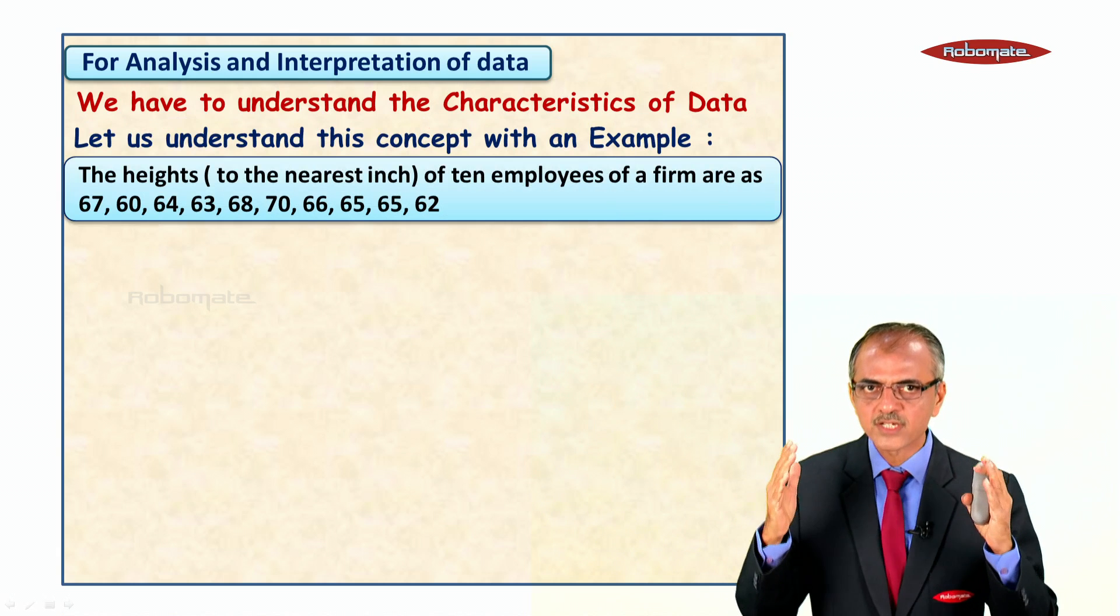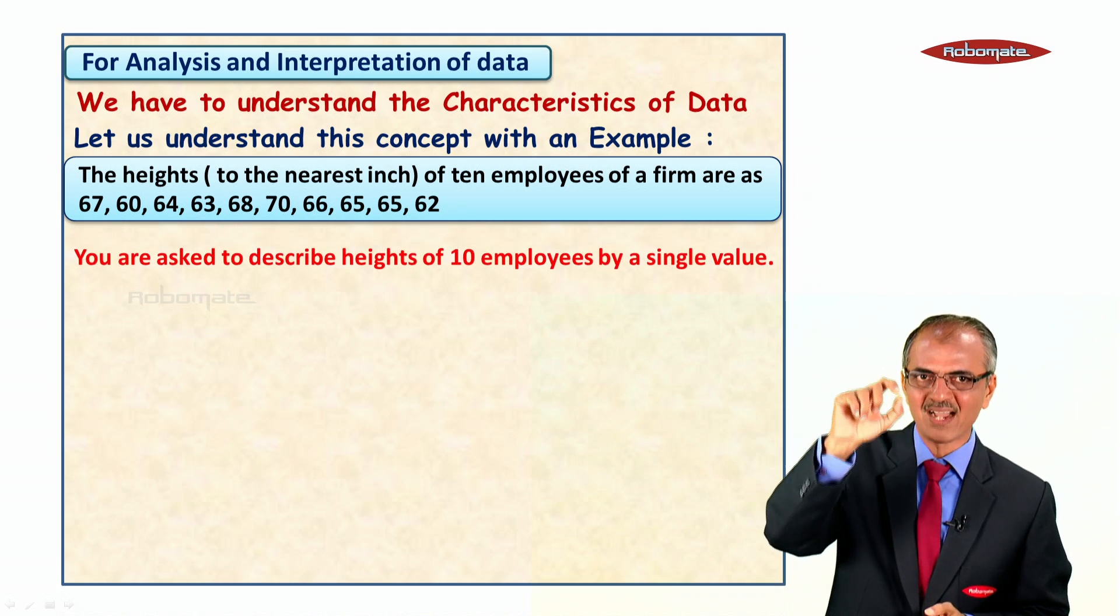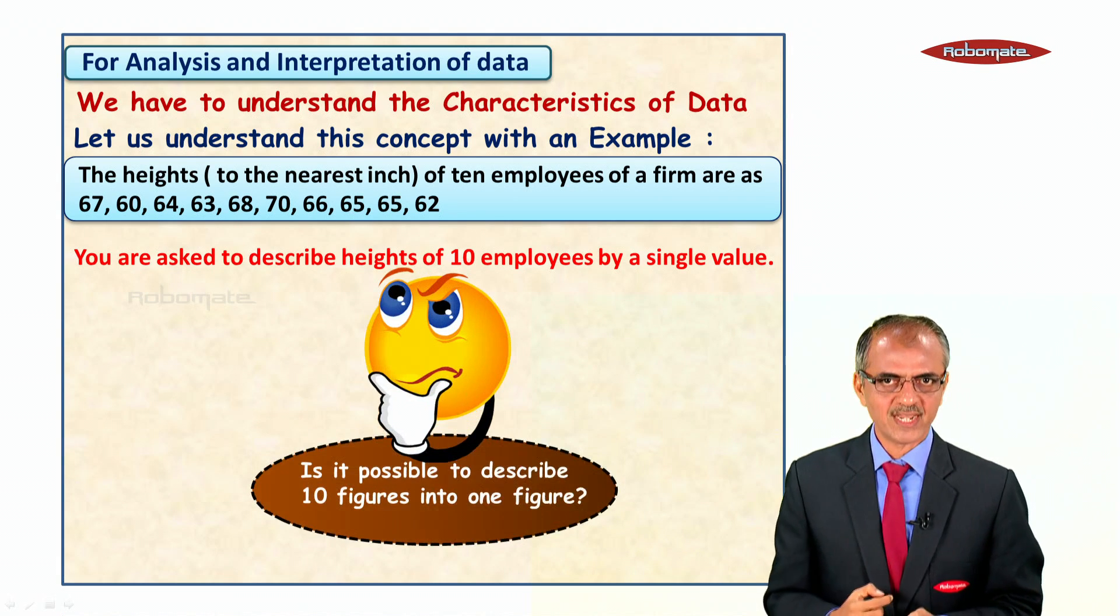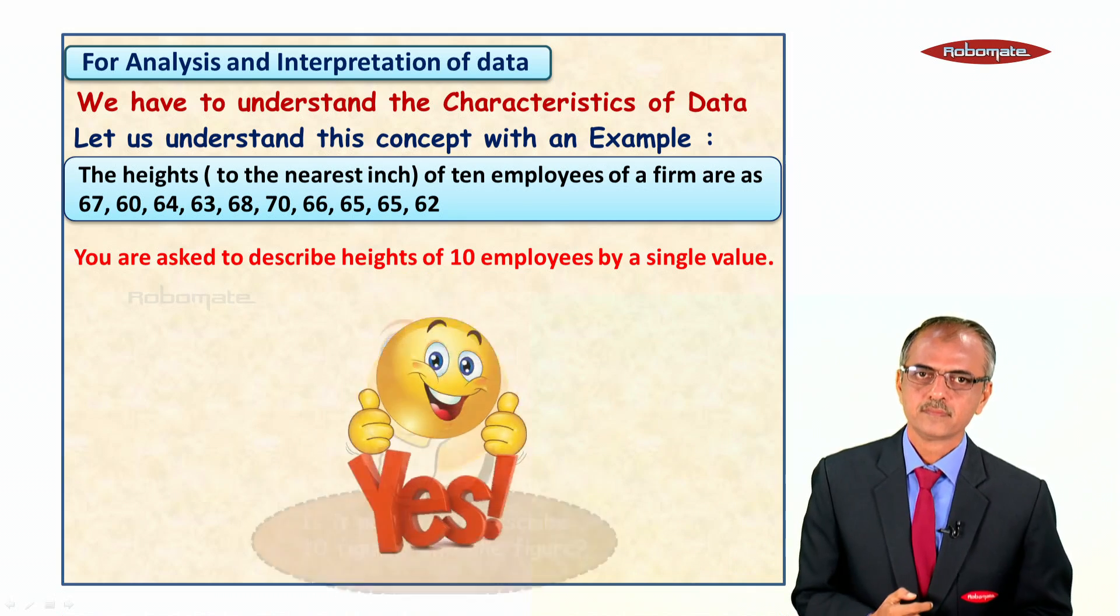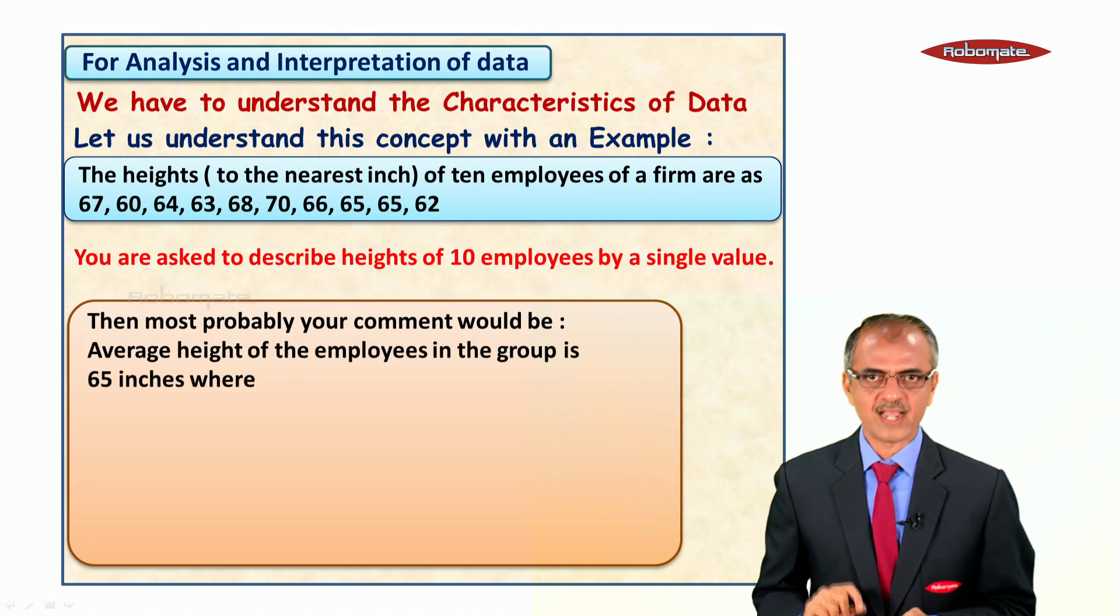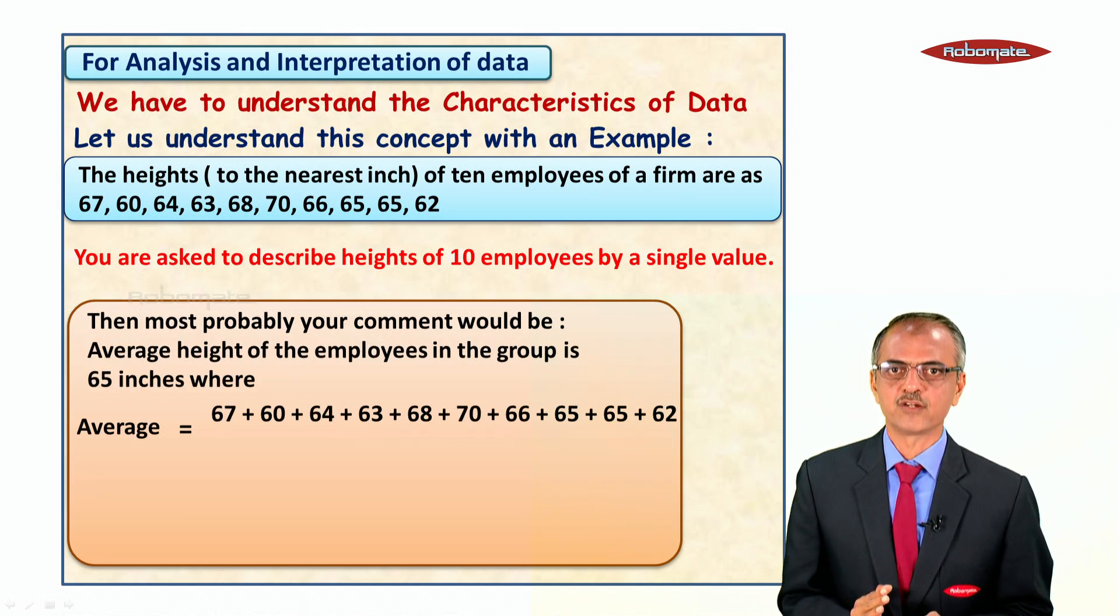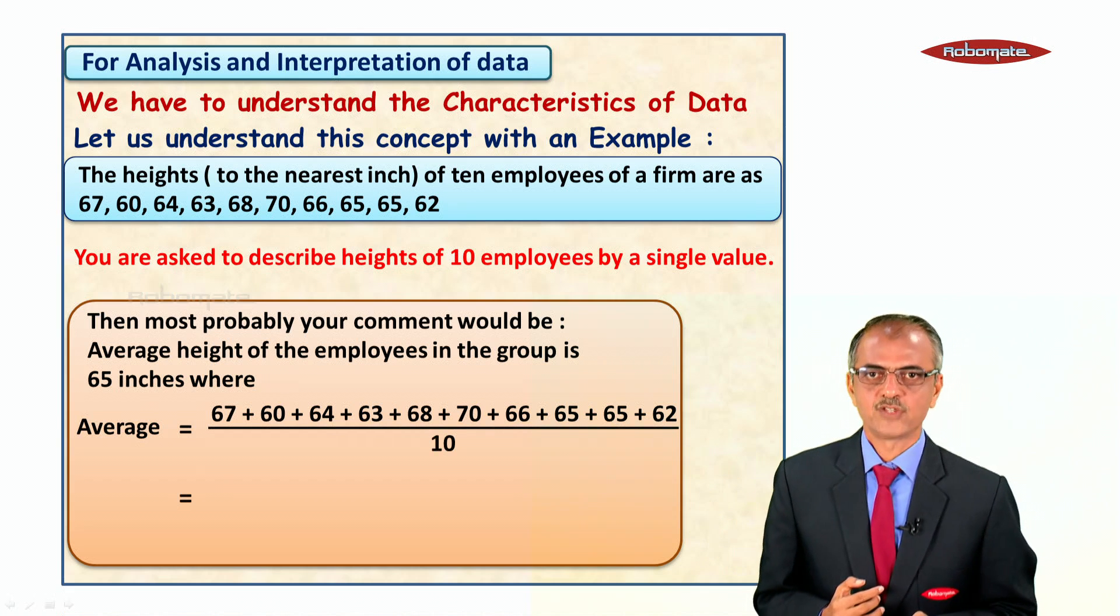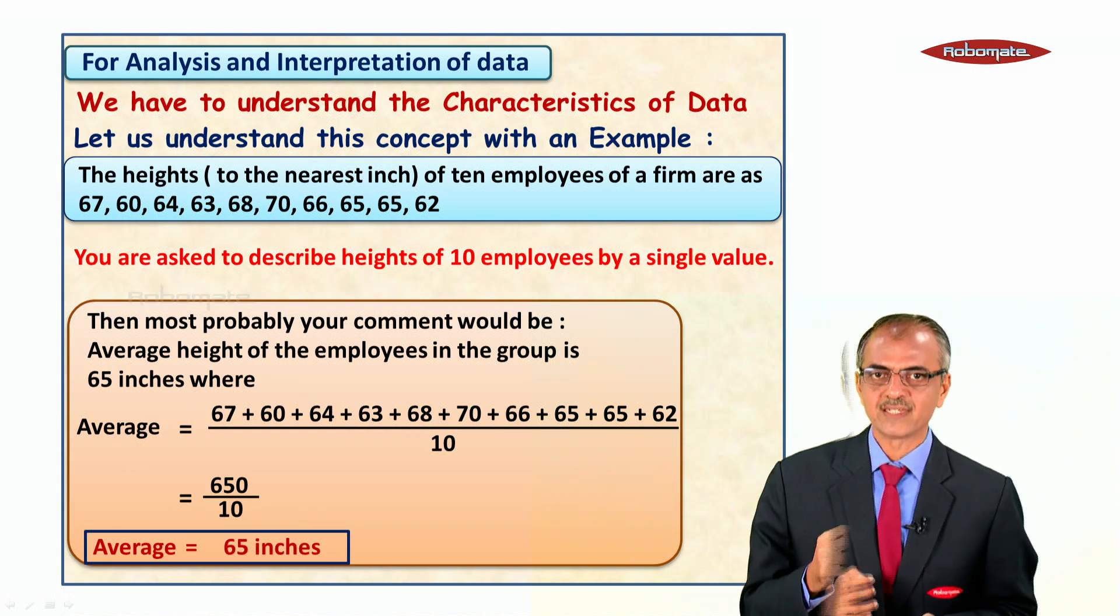The heights to the nearest inch of 10 employees of a firm are given, and you are asked to describe the heights by a single value. Is it possible to describe 10 figures into one figure? Yes. Most probably your comment will be: average height of the employees in the group is 65 inches, where average equals sum of heights divided by 10. So average equals 650 divided by 10, which equals 65 inches.